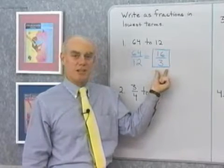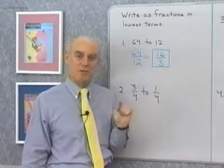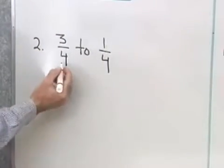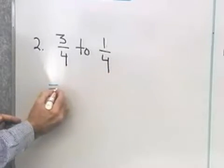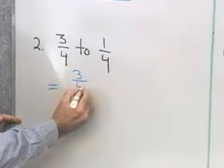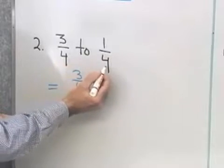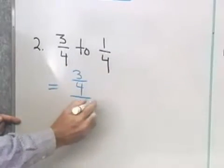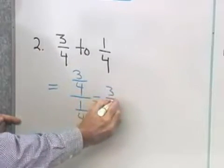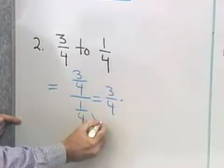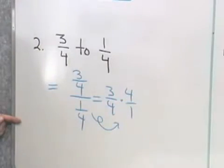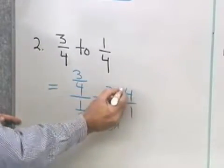Now let's look at a second problem that involves the ratio of two fractions. I have 3 fourths to 1 fourth, and I want to write that ratio as a fraction in lowest terms. This is the same as 3 fourths in the numerator and 1 fourth in the denominator. Now I have a complex fraction, so I'm going to write this as 3 fourths times the reciprocal. Those 4s divide out,